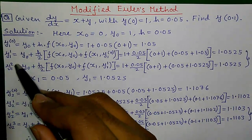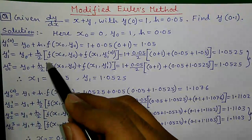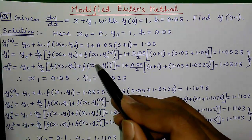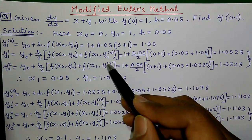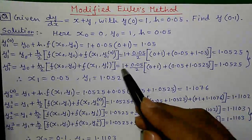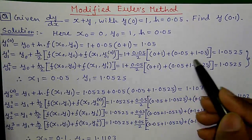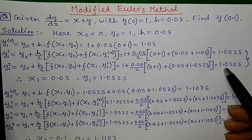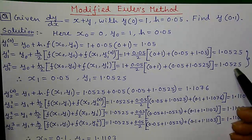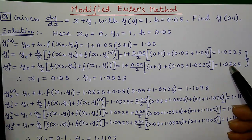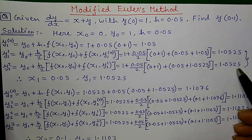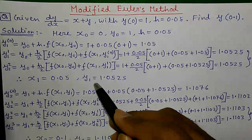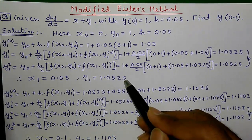This gives y1(1) equals 1.0525. Next, y1(2) uses the same formula, only the previous iteration value changes — we put 1.0525 here, which again gives 1.0525. Since we are getting exactly the same value in two successive iterations, we can stop. So x1 is 0.05 and the corresponding y1 is 1.0525.